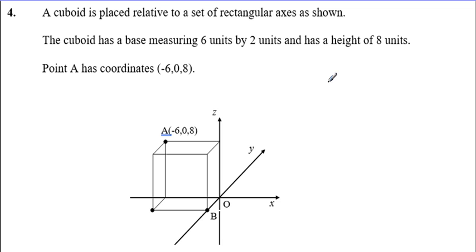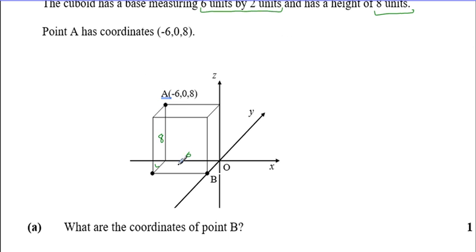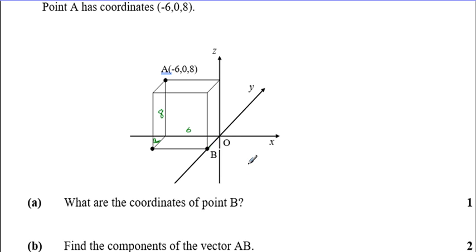Question four. A cuboid displayed relative to a set of rectangular axes. The cuboid has a base measurement of 6 units by 2 units and a height of 8 units. Point A has coordinates (−6, 0, 8) — so it's 6 along, 2 back, and 8 up. What are the coordinates of point B? Starting at the origin, we don't move horizontally on the x-axis so that's 0. We're moving 2 back along the y-axis so that's −2. It's not going up at all, so that's 0. Point B is (0, −2, 0).